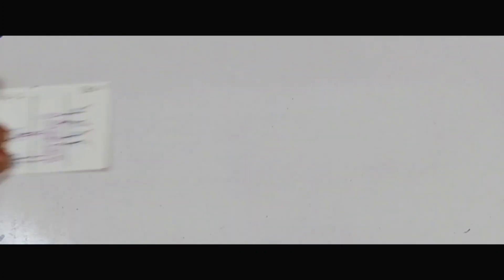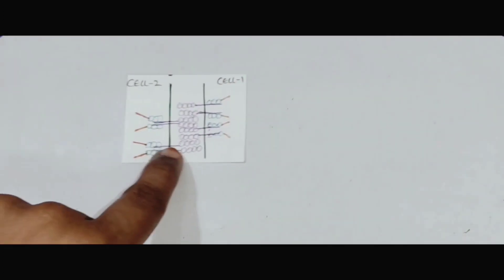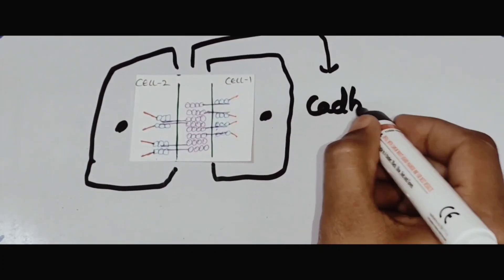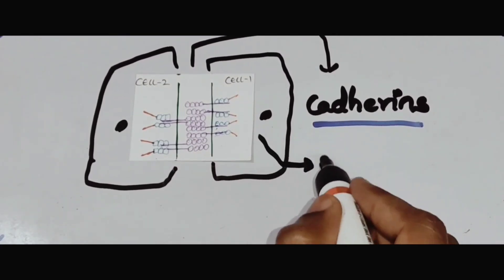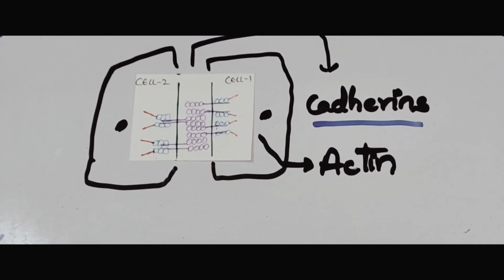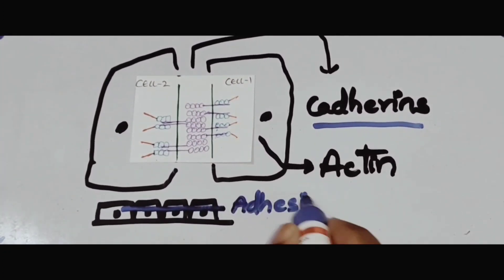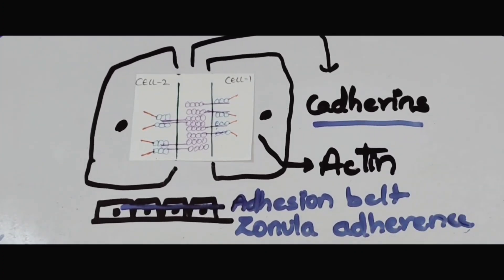Let us look at the structure of adherence junctions. Imagine two cells attached adjacent to each other. Externally, the cells are connected by cadherin proteins, and internally these are attached to actin proteins, with anchoring proteins in between. When seen in the epithelial lining, these adherence junctions are arranged like a belt, so we call it the adhesion belt or zonula adherens.